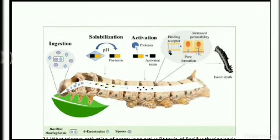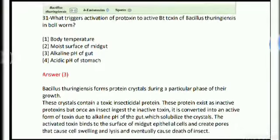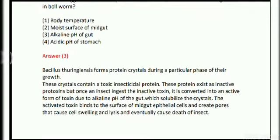The midgut of insects has quite an alkaline pH. In that alkaline medium, when the prototoxin arrives, it becomes active. When activated, it binds to receptors present on the lining of the midgut and increases permeability to enter the cell. The activated toxins enter the midgut and help form holes or pores throughout these cells, eventually causing death of the insect. So the answer is option 3: alkaline pH of gut.